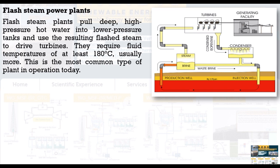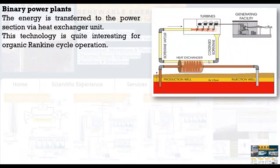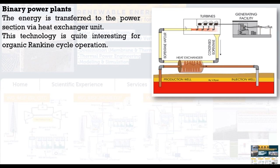After the process heat is finished, we have exhaust steam for the turbines and generator. For binary cycle, we use a heat exchanger as an intermediate unit, and usually we can use pentane or an organic working fluid.